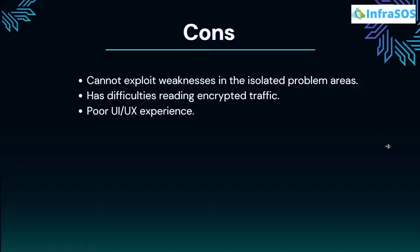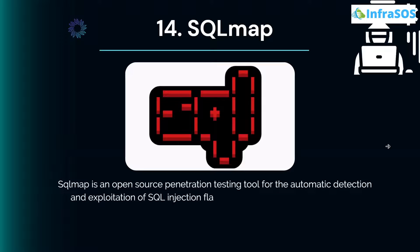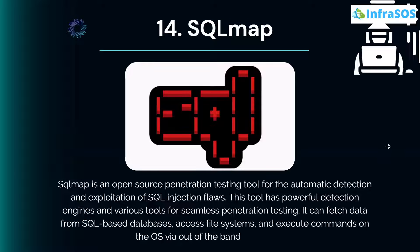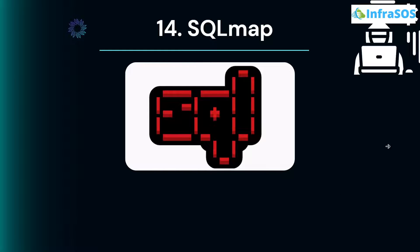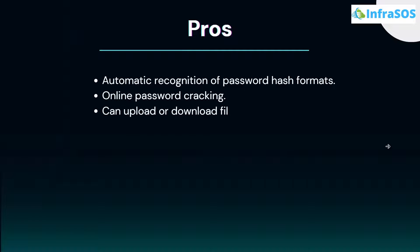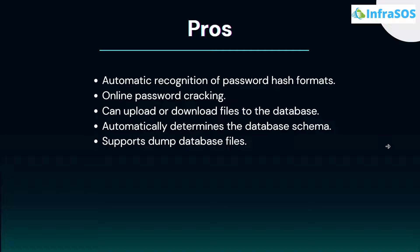At number 14 on our list we have SQLmap. SQLmap is an open-source penetration testing tool for the automatic detection and exploitation of SQL injections. It has powerful detection engines and various tools for seamless penetration testing. It can fetch data from SQL-based databases, access file systems, and execute commands on the OS via out-of-band connections. Major pros include automatic recognition of password hash formats, online password cracking, the ability to upload or download files to the database, and automatically determining the database schema.